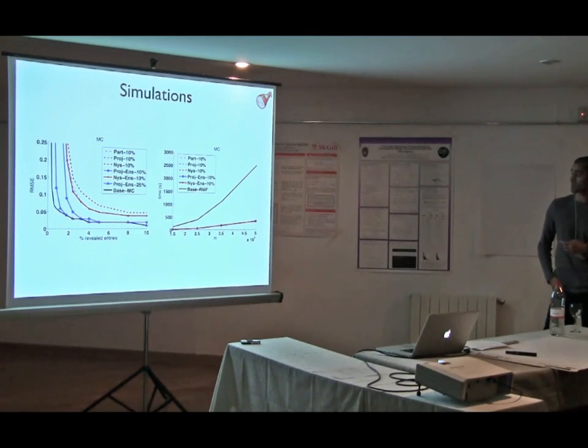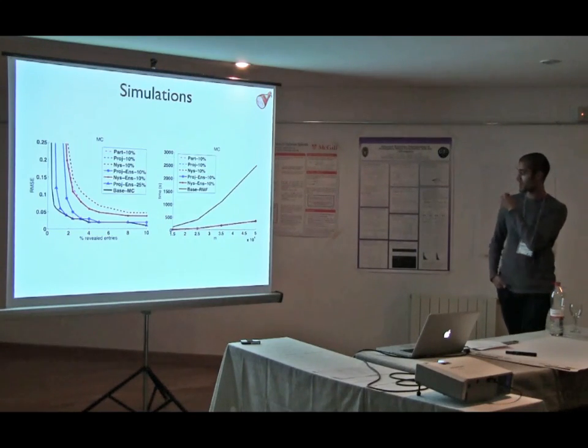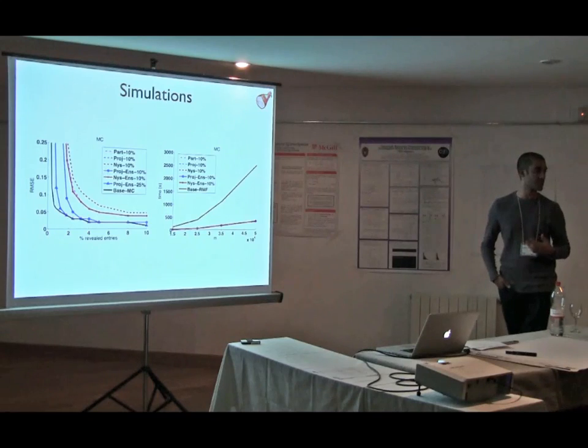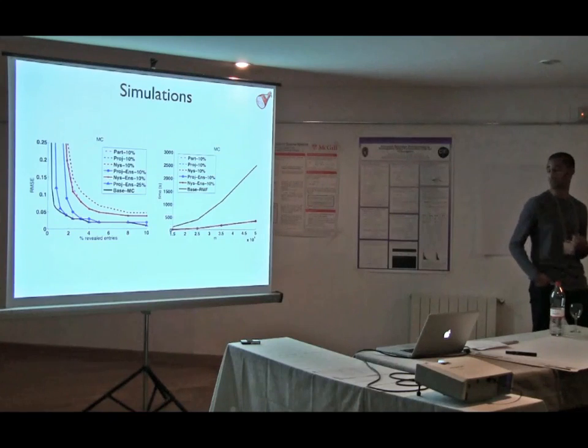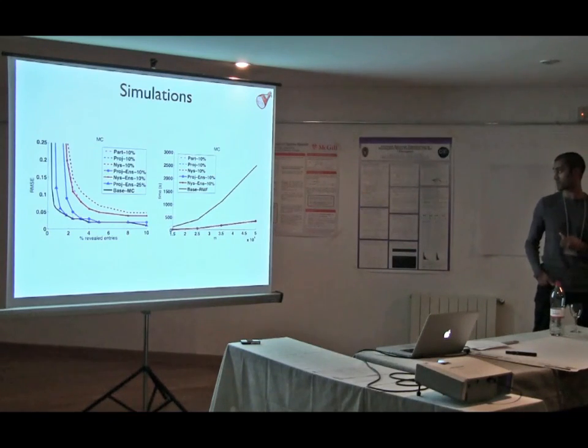this is time on the y-axis as a function of matrix size. Again, these are square matrices. And we see the black line is the base algorithm we're using. That should say base, then C and then base RF. And all of the other variants are roughly the same time. Because again,